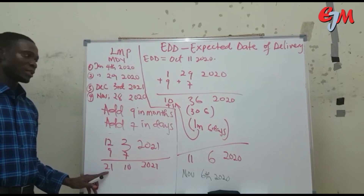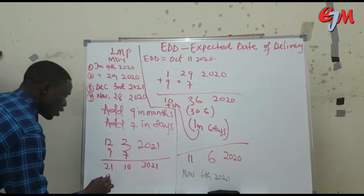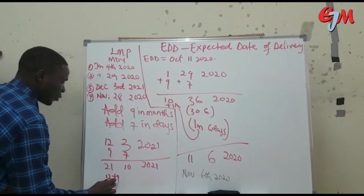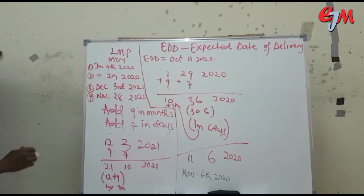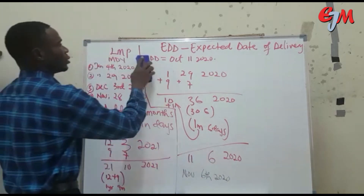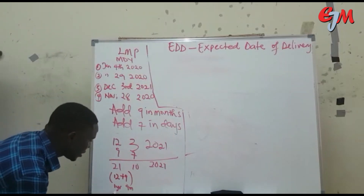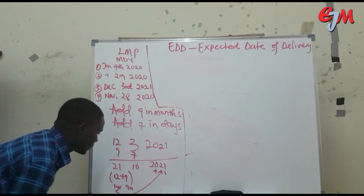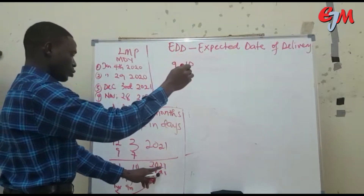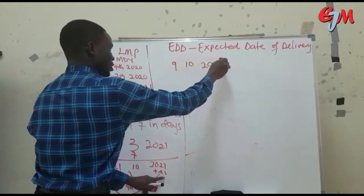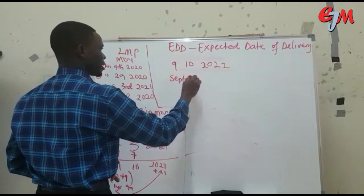Since 21 months is more than a year, we split it: 12 months equals 1 year, leaving 9 months remaining. Take that 1 year and add it to the year column: 2021 plus 1 gives you 2022. The remaining 9 months gives us September, so the date becomes September 10th, 2022.